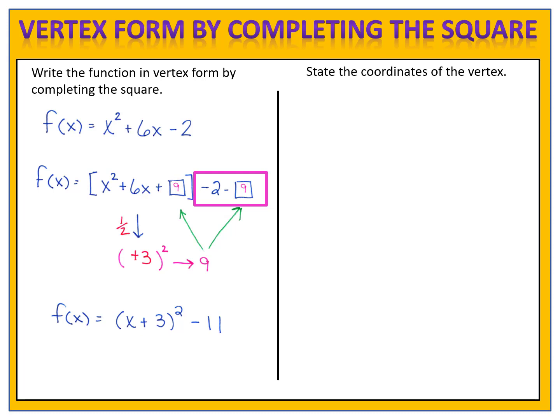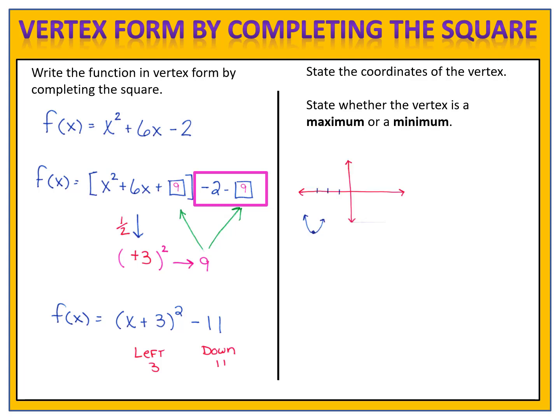The second part of the problem says: state the coordinates of the vertex and state whether the vertex is a maximum or a minimum. Left 3 is given by the x plus 3, and down 11 is given by the minus 11. So moving left 3 and down 11 puts the vertex in the third quadrant at the point negative 3, negative 11. This parabola opens upward because we have a positive leading coefficient — positive x squared — so the vertex is a minimum.